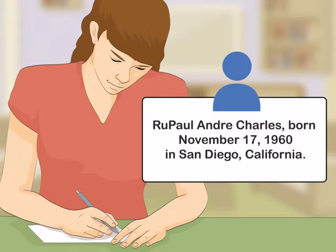Discussing early life and childhood. Mention the person's name, birth date, and place of birth. Start by including key biographical details like the person's full name and their birth date. You can also provide the person's place of birth, especially if it will give readers context for the rest of the biography.